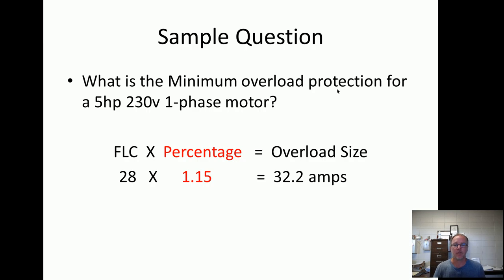Sample question: What is the minimum overload protection for that five-horsepower, 230-volt, single-phase motor? We established the full load current was 28 amps. The question doesn't say anything about service factor or temperature rise, and it does say minimum. So we use the all-other-motors percentage: 28 amps times 1.15 equals 32.2 amps. We need to size an overload at 32.2 amps, or find the next size up closest to that.